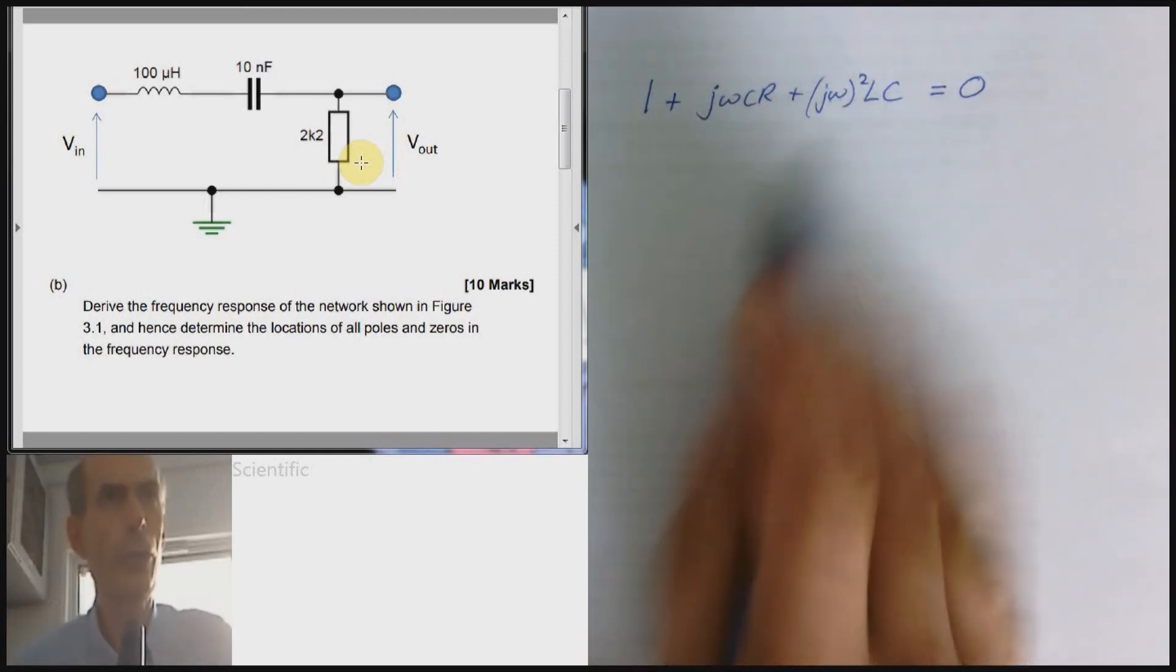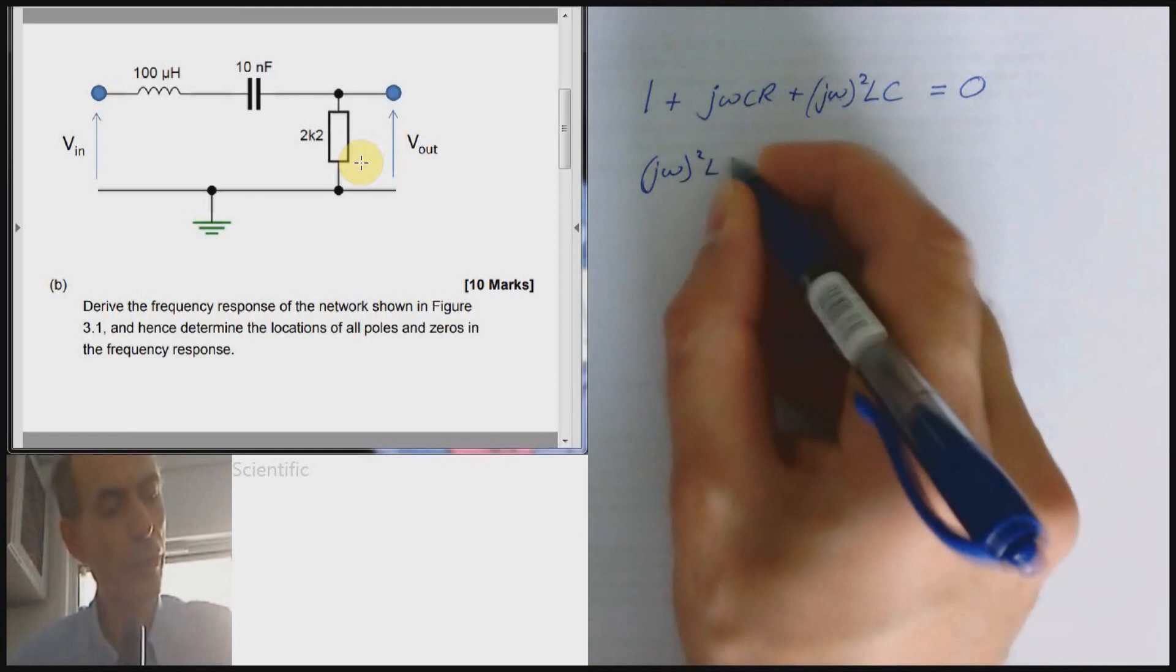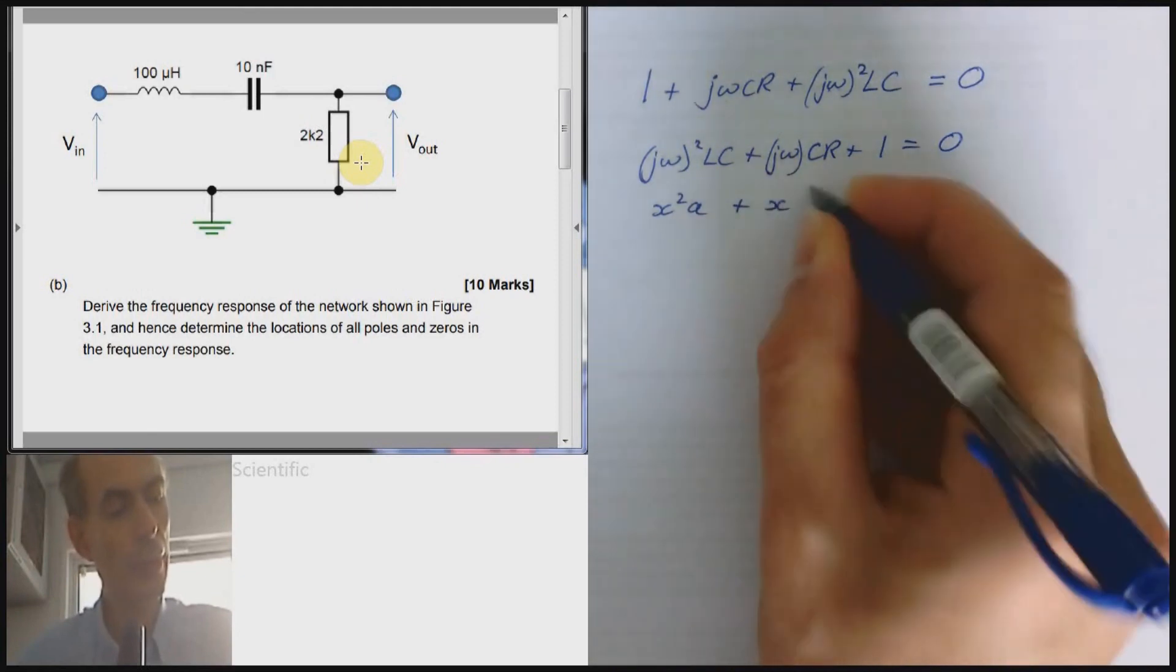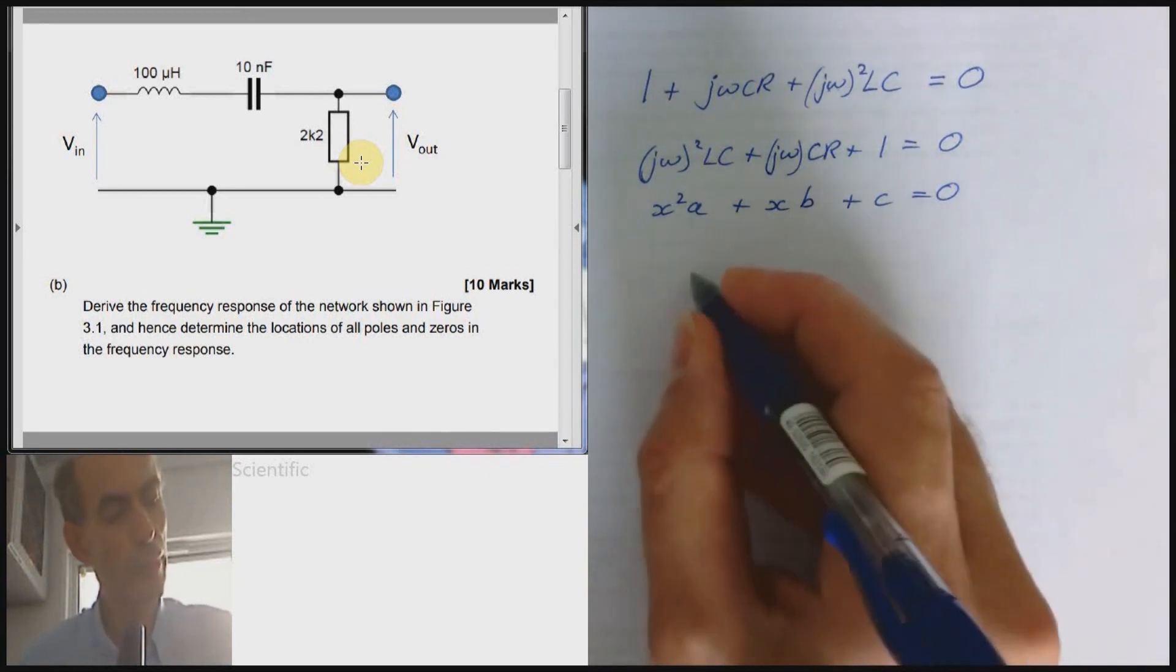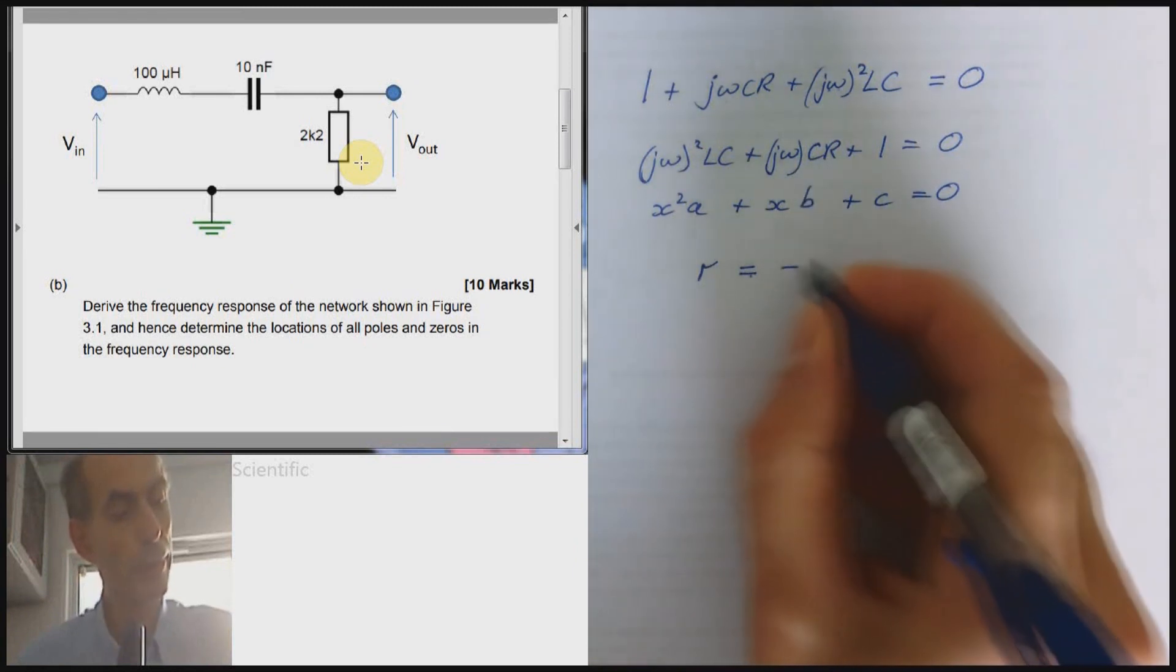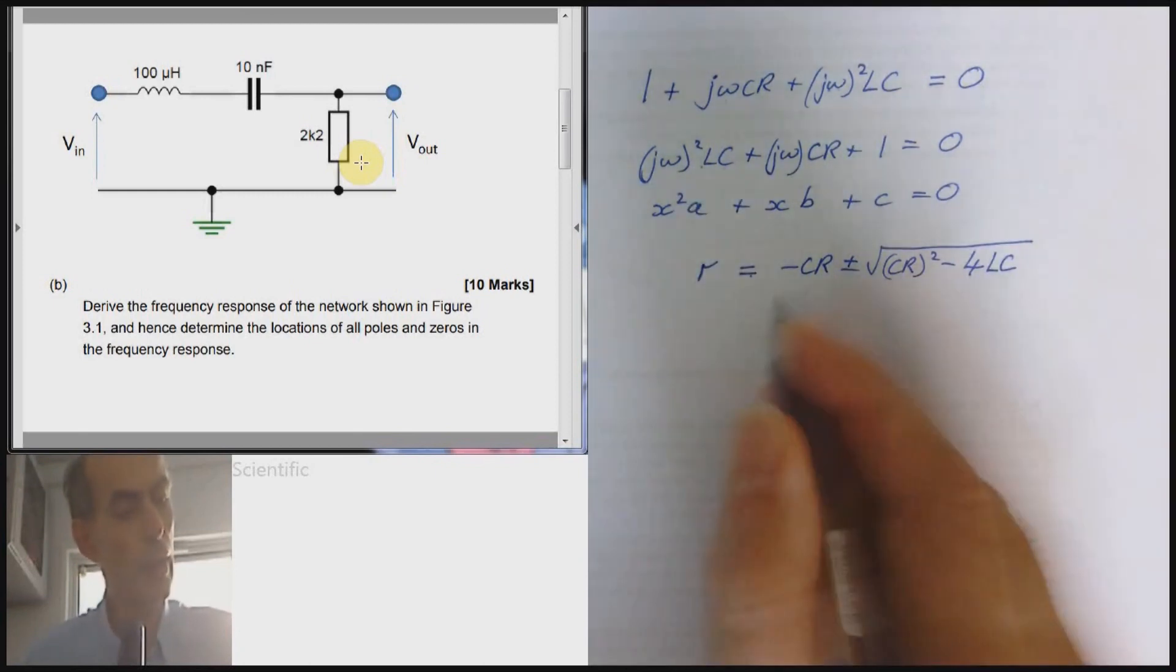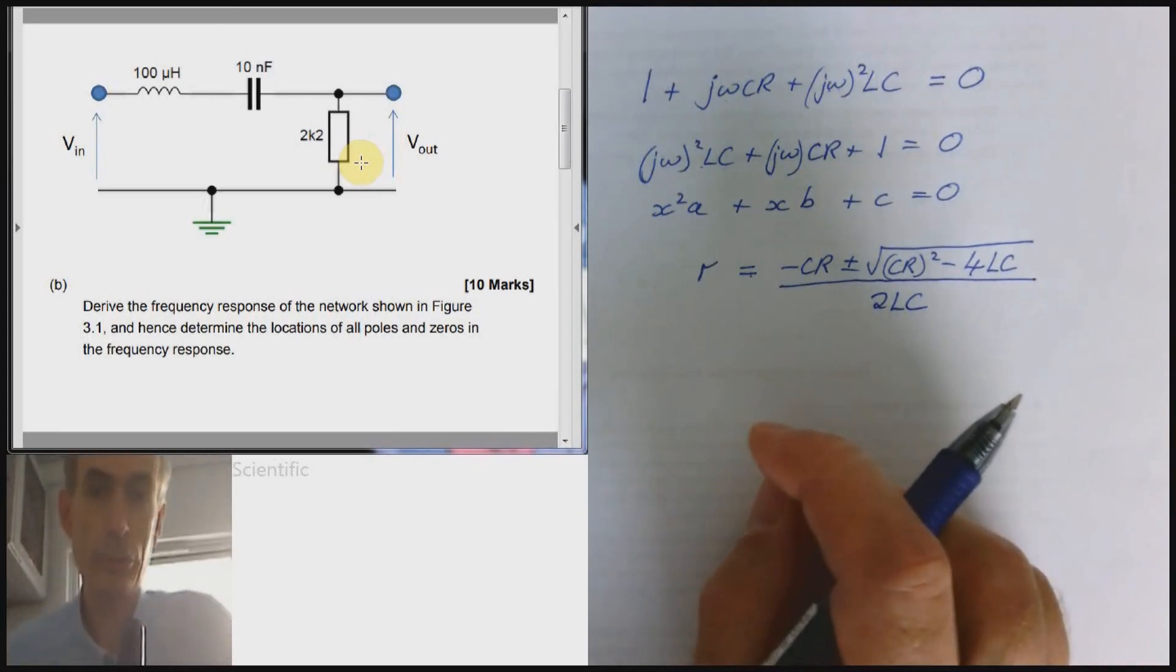how do you work out the roots? Well, it's a quadratic equation. If I expressed it in perhaps a slightly more familiar form, jω squared times LC plus jω times CR plus 1 equals 0. That is in the standard form of x squared times A plus x squared times B plus C equals 0. The standard quadratic equation works just fine. The roots of this, I'll call them R, would be given by minus B, which is minus CR, plus or minus the square root of B squared, minus 4 times A, that's LC, times C, that's just 1, all over 2A, 2 times LC.